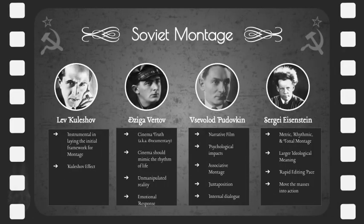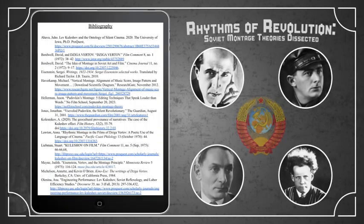Understanding the theories of Kuleshov, Vertov, Pudovkin, and Eisenstein allows audiences to appreciate the artistry behind editing and deepen their engagement with the films they watch. Each theorist offered valuable insight into the art of editing and shaping how we perceive and interpret visual storytelling. Thank you for watching this episode of Tom Talks Film. I hope you enjoyed my exploration of these early Soviet contributions to the way movies are constructed through the editing process. My sources for this project are listed here and in the video description below. Until next time, get out there and assemble something interesting.